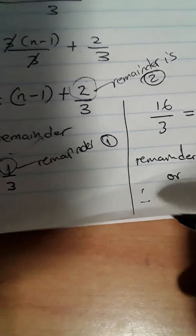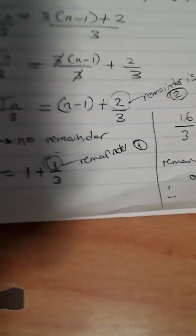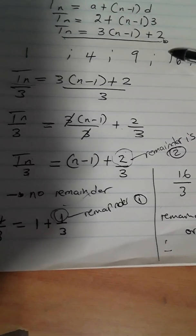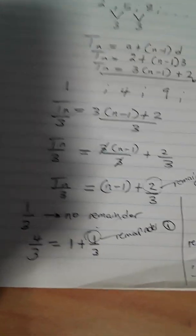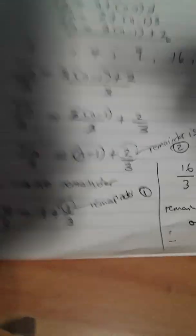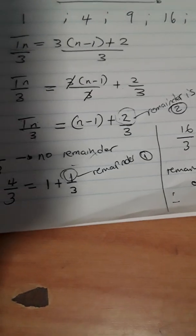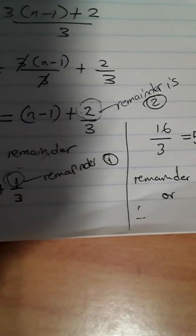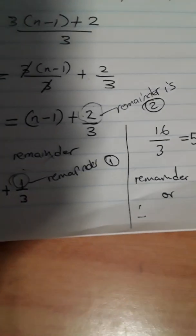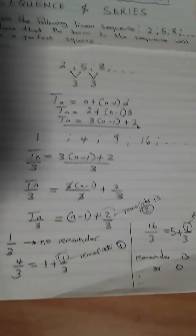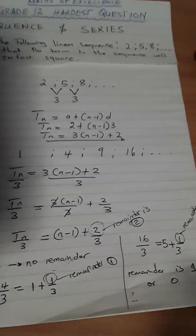Therefore, this proves that no term in this linear sequence will be a perfect square. When the sequence is divided by 3 the remainder is 2, but when every perfect square is divided by 3 the remainder is either 0 or 1. They yield a different remainder. Thank you. Make sure you subscribe for more discoveries.